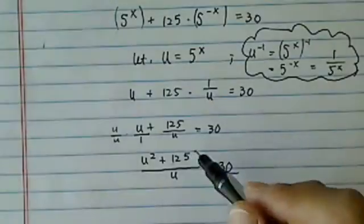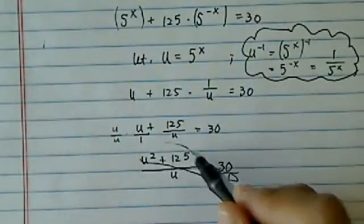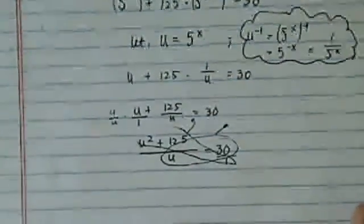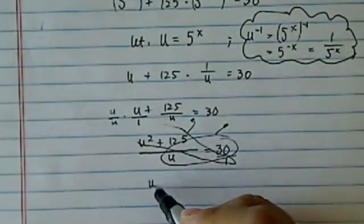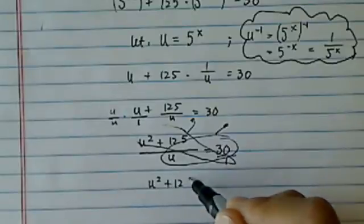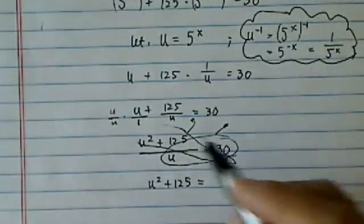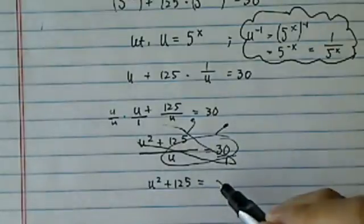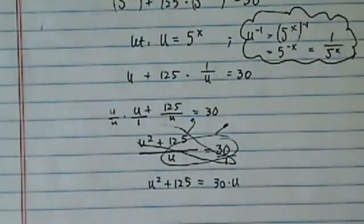From here, I'm going to do this thing called a butterfly to get myself out of the fraction. I don't know about you, I don't like equations with fractions in it. So this will allow me to cross multiply: u squared plus 125 times 1, that's equal to 30 times u.